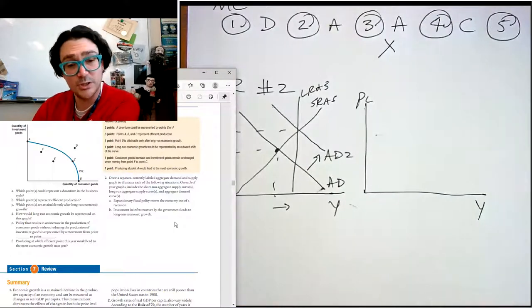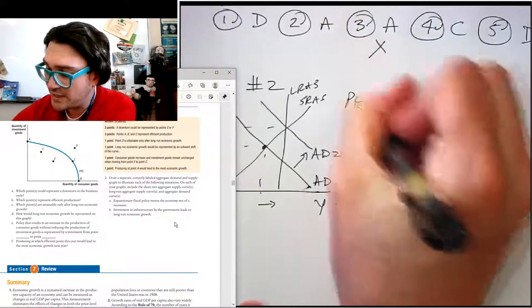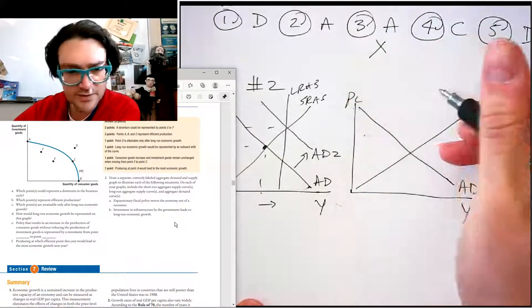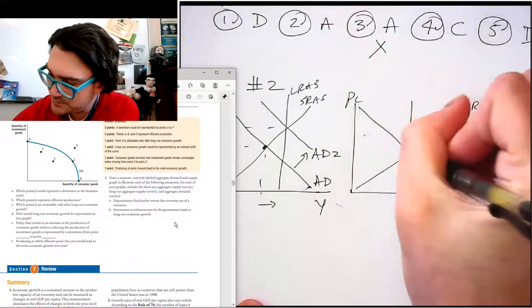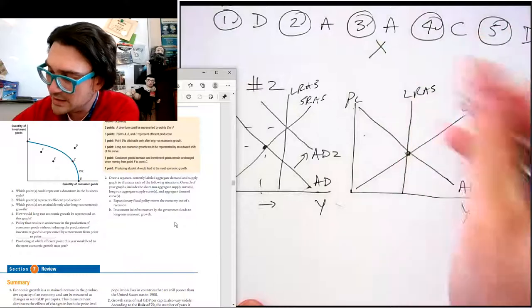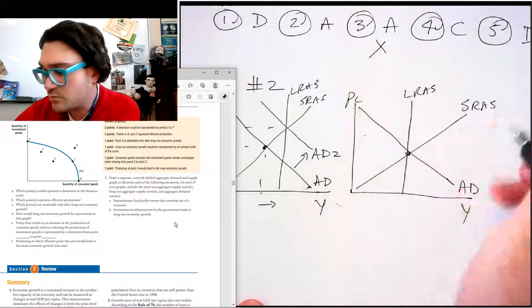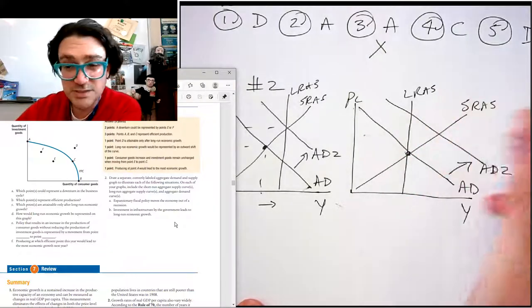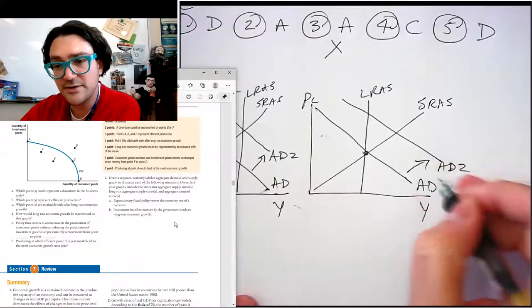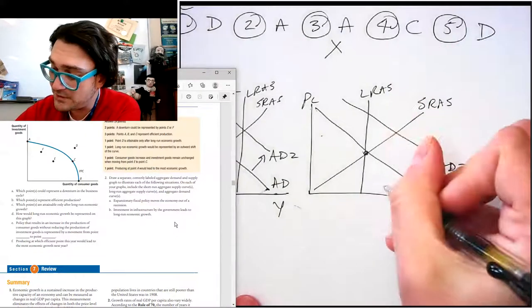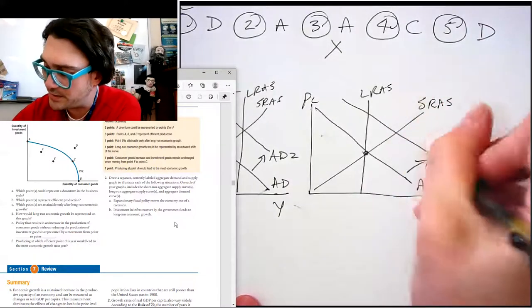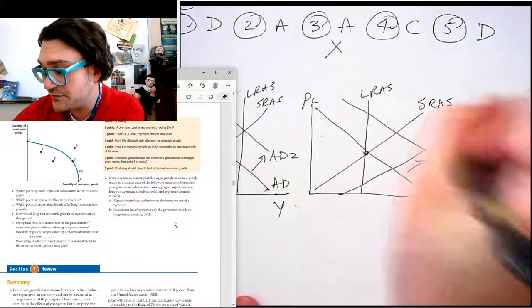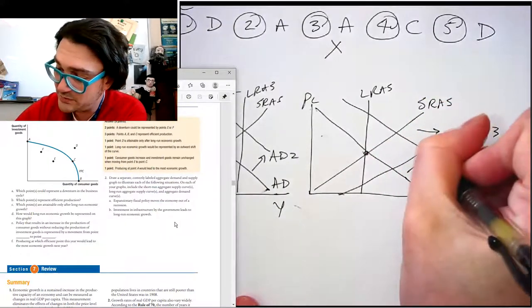Investment in infrastructure by the government leads to long run economic growth. It's funny, actually, right now the government is debating a huge infrastructure bill. So it's kind of funny that we would have that. So this one, right, LRAS, and you can actually kind of say more aggregate demand here. And so aggregate demand goes to there, but then this is where this one kind of gets a little wonky, right? The increased aggregate demand would increase the productivity of the economy, right, in the long run. And so SRAS would eventually shift to the right. So that's like, then we get to there.